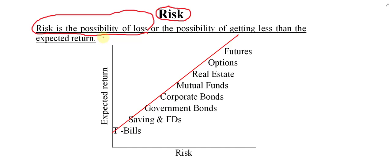Basically, risk is in between profit and loss. If things go in the right direction, on the positive side, there will be a profit; but if they go on the wrong side, there is a loss for the business. So risk is neither profit nor loss — it is just the possibility of loss, or the possibility of getting less than expected return.